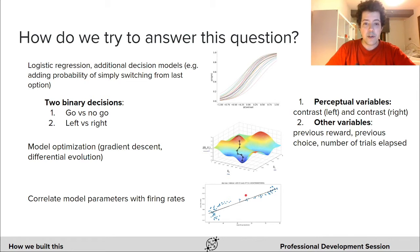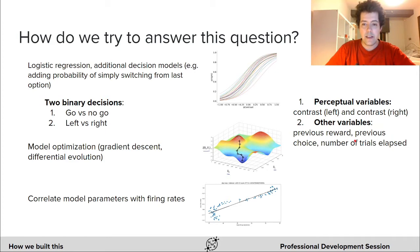Throughout the entire project, we use the following set of variables from the Steinmetz dataset, which can be divided into the following groups: the perceptual variables like the contrast intensity on the left and on the right of the screen, and other variables like previous reward, the previous choice, and the number of trials elapsed.